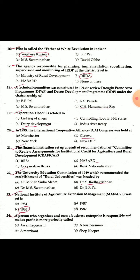Question 19: Operation Flood is related to dairy development. The first phase of Operation Flood started in 1970-71. Question 20: In 1995, the International Cooperative Alliance (ICA) Congress was held — it was first held in Geneva.